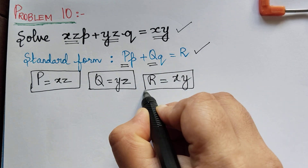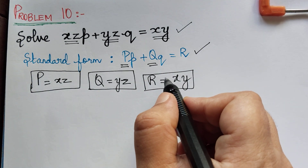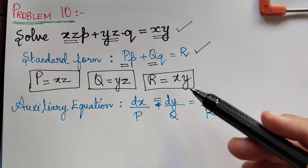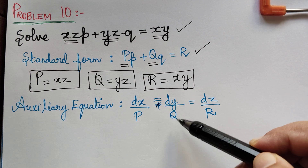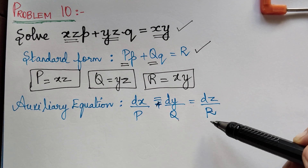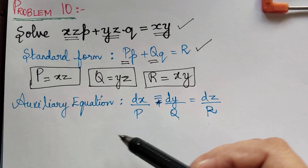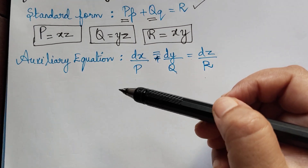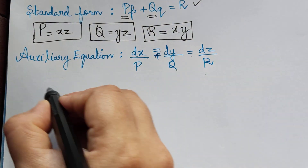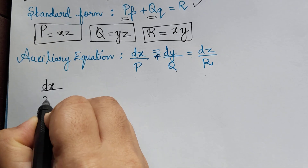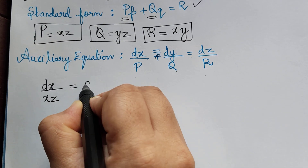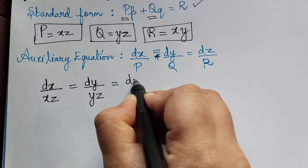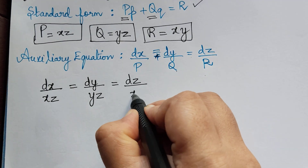Now we shall write the auxiliary equation. The auxiliary equation is given by dx by capital P is equal to dy by capital Q is equal to dz by capital R. Substituting P, Q, and R, we obtain dx by xz is equal to dy by yz is equal to dz by xy.